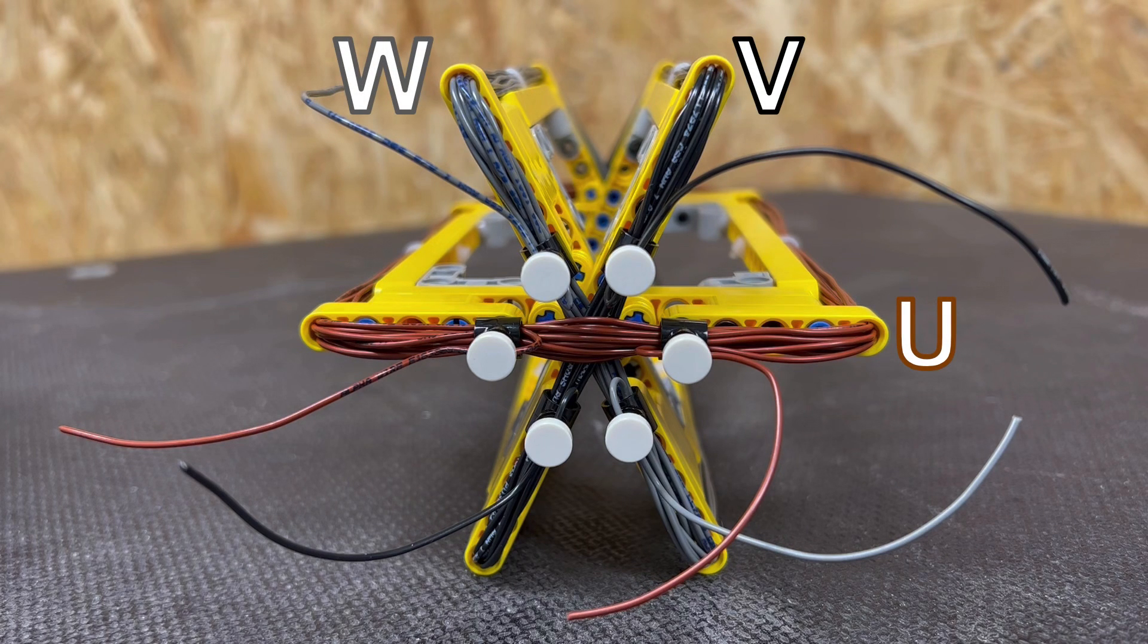and we'll differentiate the two ends of each winding with numbers. So this one here is U1 and the other end will be U2.